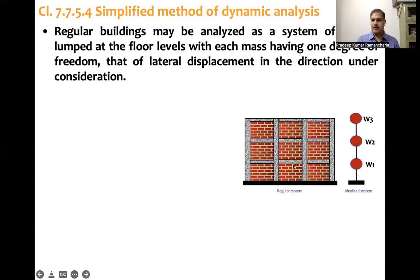So here W1, the seismic weight at first floor is entire weight of the first floor and half of the weight of columns and walls in the second floor and half of the weight of columns and walls in the first floor. Similarly in third floor,